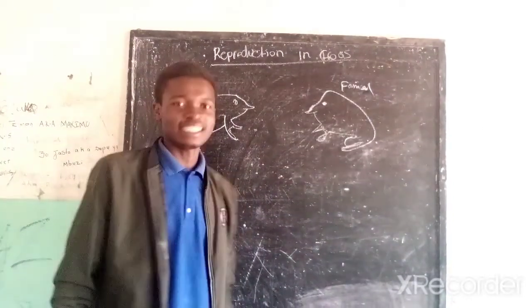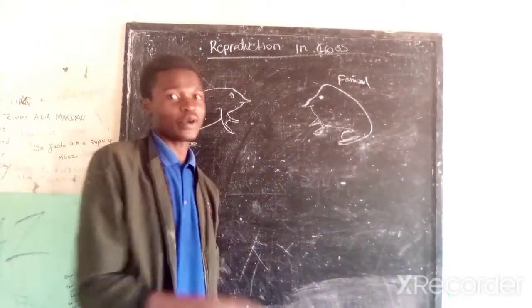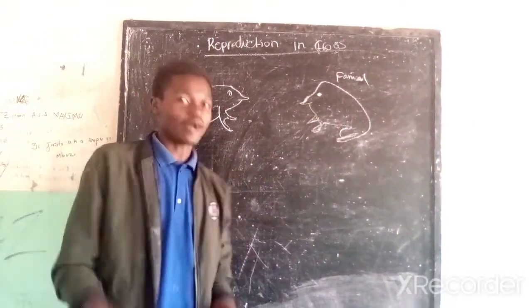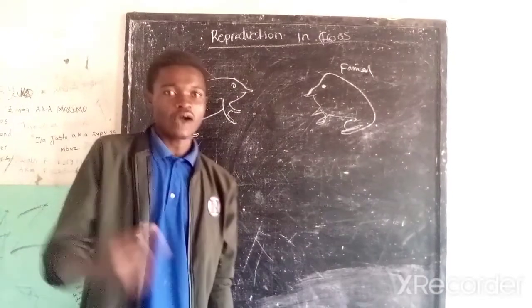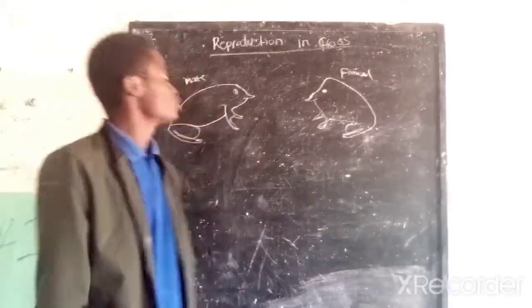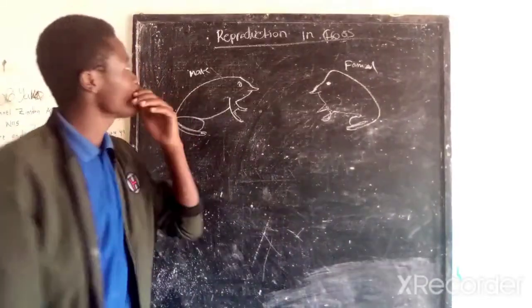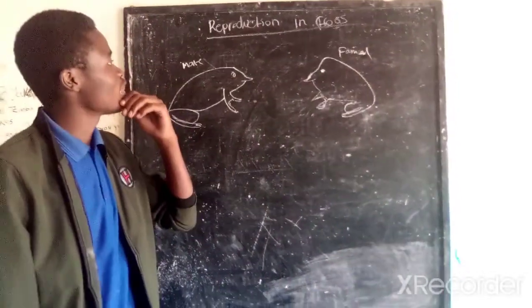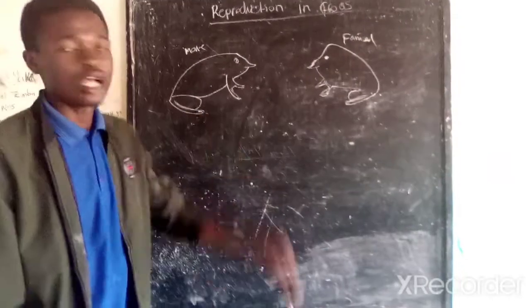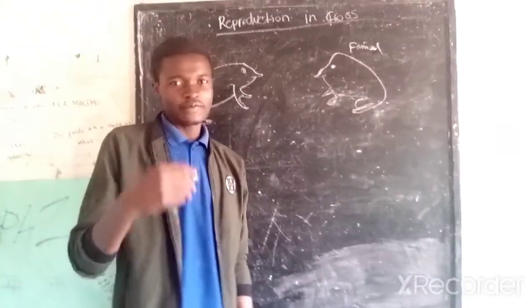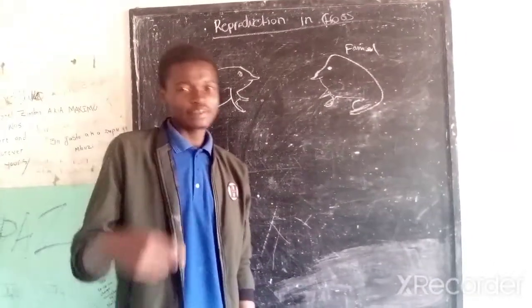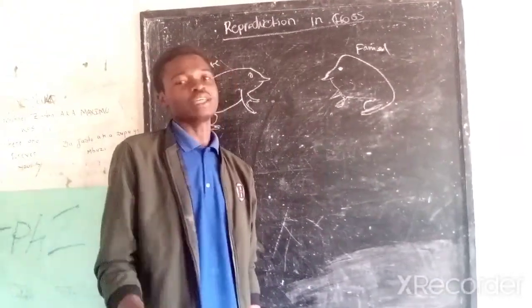Reproduction is the process where living organisms produce their young ones. Today, specifically, I want to talk about reproduction in frogs. Reproduction in frogs takes place in water.